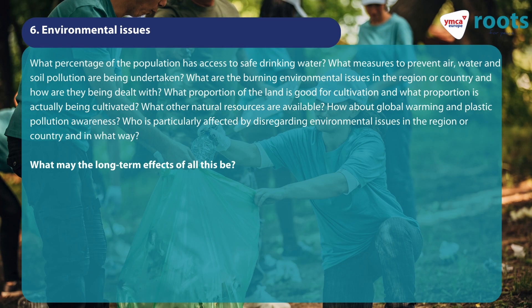Environmental issues: What percentage of the population has access to safe drinking water? What measures to prevent air, water, and soil pollution are being undertaken? What are the burning environmental issues in the region or country and how are they being dealt with? What proportion of the land is good for cultivation and what proportion is actually being cultivated? What other natural resources are available? How about global warming and plastic pollution awareness? Who is particularly affected by disregarding environmental issues in the region or country and in what way? What may the long-term effects of all this be?